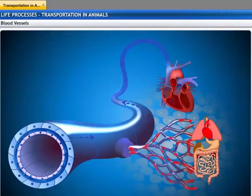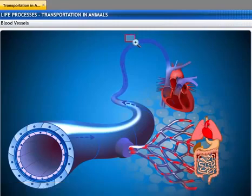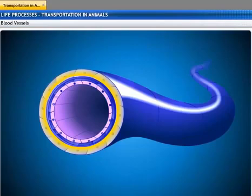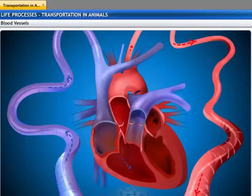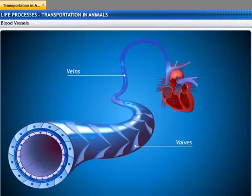The capillaries then join to form veins that carry the blood away from the organ or tissue. Veins collect blood from different organs and transport it back to the heart. As compared to arteries, veins have thinner and less muscular walls, because the pressure of the blood that they carry is much lower. Due to the same reason, veins have valves that allow the blood to flow only in one direction, ensuring that the flow of de-oxygenated blood is one way — only towards the heart.